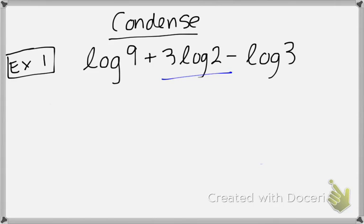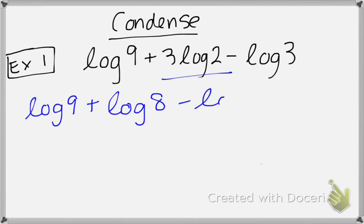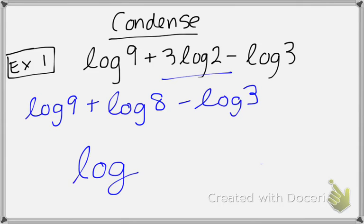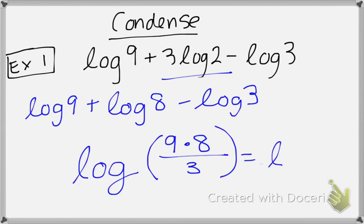Let's rewrite these. I have the log of 9 plus the log of 2 cubed, which is 8, minus the log of 3. When condensing, you should only write the word log one time — we want one single logarithm. Log of 9 is positive, so that value goes to the numerator. Log of 8 is positive, so that value also goes to the numerator. Then all I need to do is simplify, and here's what I get.